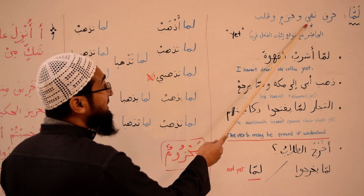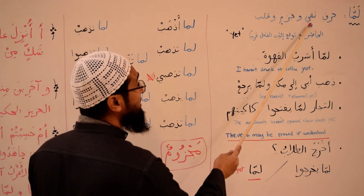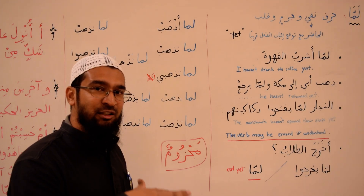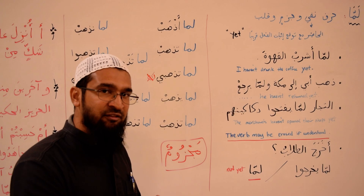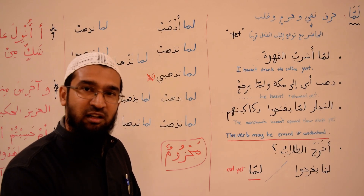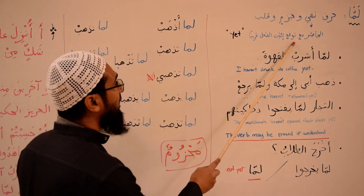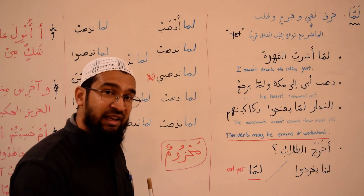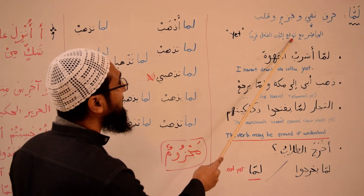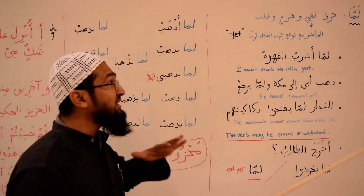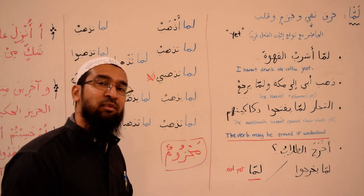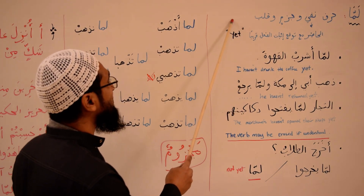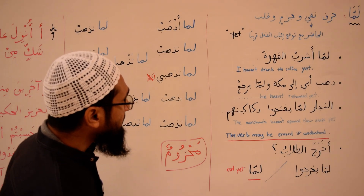However, the negation here — you've got to pay attention to this — the negation is negating al-hadir, it's negating the present time, as we speak. It's negating the verb: did not do such and such. Along with negating the verb now, it is expected that the action is going to take place soon. So we throw in the word 'yet': we haven't done such and such yet.